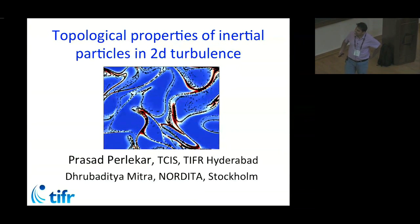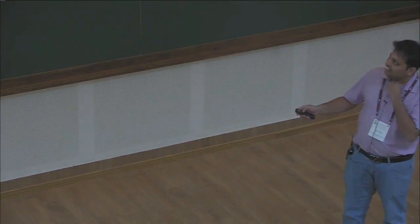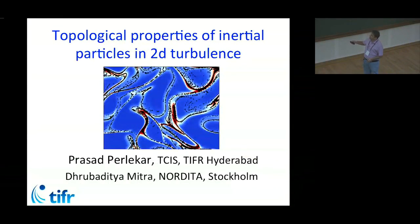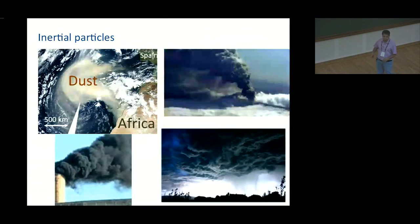Let me start by thanking the organizers for this nice conference and allowing me to talk here. What I'm going to talk about is a problem which I have been doing for past three years. It started by a visit to Nordica. Let me first tell you what is it about. Topological properties, by that I mean flow properties of inertial particles in 2D turbulence. It could be in any chaotic flow.